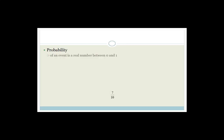The probability of an event is a real number between 0 and 1. Either it can happen or it doesn't happen. The closer you are to 1, the more likely it will happen; the closer you are to 0, the less likely it will happen. For example, the probability of getting a tail when flipping the coin is 0.5, for the simple reason that you've only got two options — so there's a 50% chance of getting tails and 50% chance of getting heads.